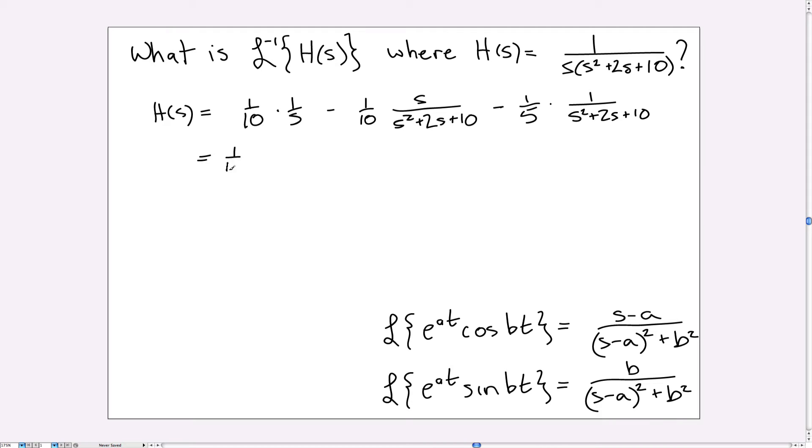And let's try and figure out how to get them into the right form. So here we have 1 over 10 times 1 over S. Now the transform of this guy is straightforward. 1 over S is the transform of a constant, so this will go, when I invert it, this will go back to 1 over 10.